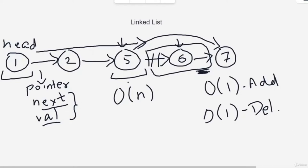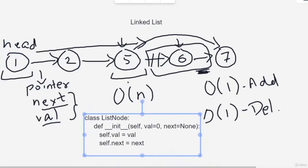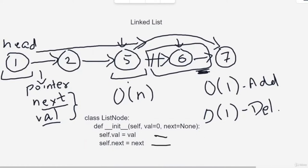Let's talk about the code. We usually have a class that represents the value and the next pointer. This is the constructor class we create for every list node — value assigned as 0 and next assigned as None by default. This is what we use in functions.